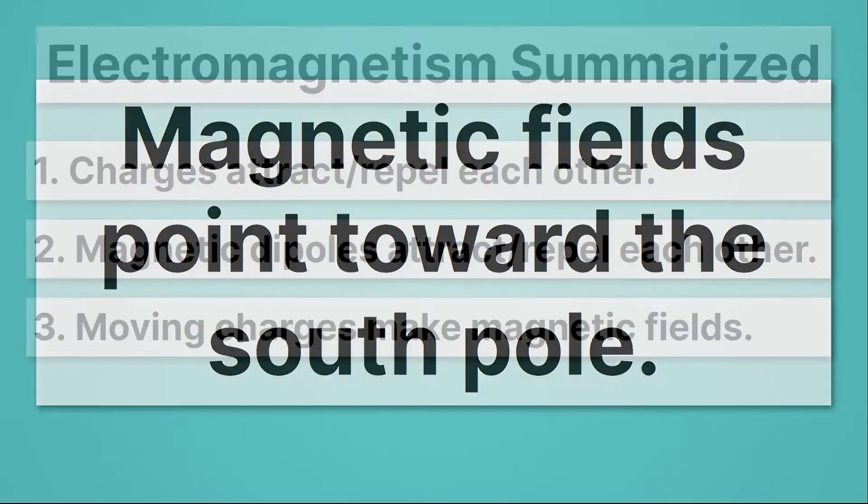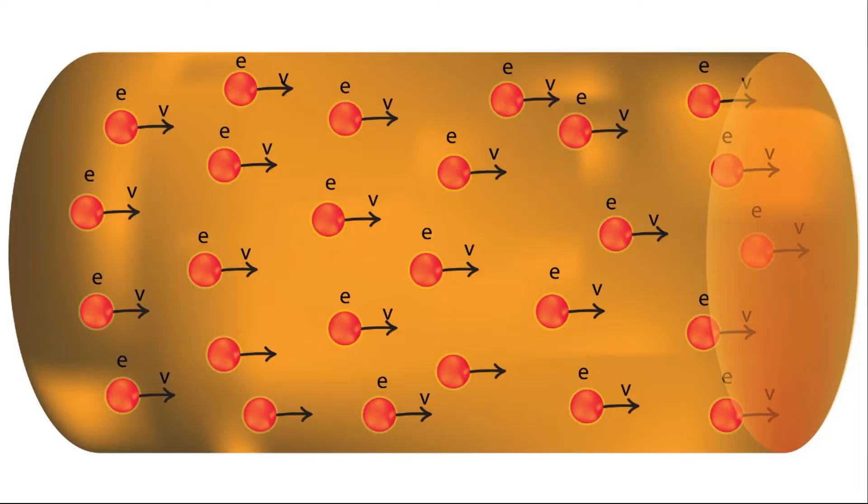The next principle is that moving charges make magnetic fields. So if I have charges that are moving, it makes magnetic fields. And here you can start to see the link between electricity and magnetism. This is a wire, and all of those red dots are electrons moving. As those electrons move through the wire, they actually generate a magnetic field. So currents and wires are moving charges, and they generate magnetic fields around them.